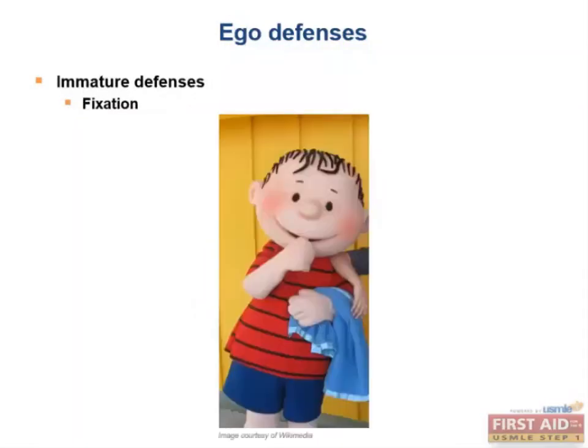Next we have fixation. Fixation is when an individual partially remains at an earlier stage of development, such as a young boy who still carries around a security blanket but is otherwise normal. Think of Linus from the comic strip Peanuts.